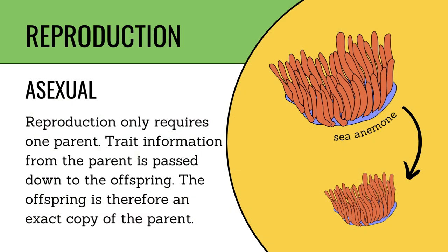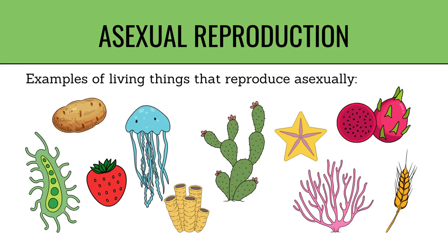In asexual reproduction, only one parent is required. Trait information from the parent is passed down to the offspring, and the offspring is therefore an exact copy of the parent. Examples of living things that reproduce asexually include algae, potato, strawberry, jellyfish, cactus, starfish, dragon fruit, and wheat.